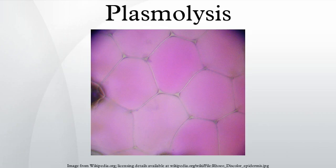Turgidity: A plant cell in a hypotonic solution will absorb water by endosmosis, so that the increased volume of water in the cell will increase pressure, making the protoplasm push against the cell wall — a condition known as turgor. Turgor makes plant cells push against each other in the same way and is the main method of support in non-woody plant tissue.